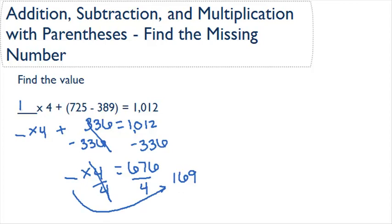So that's what we can fill in our original equation. 169 times 4 plus 725 minus 389 in parentheses equals 1012.